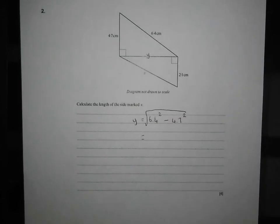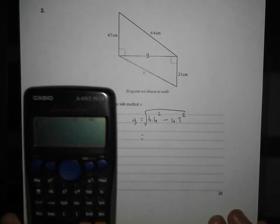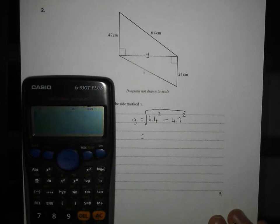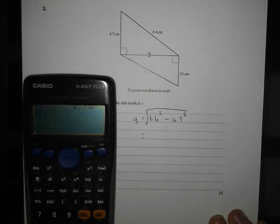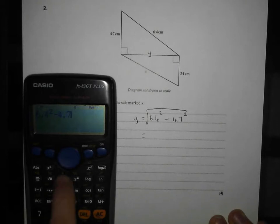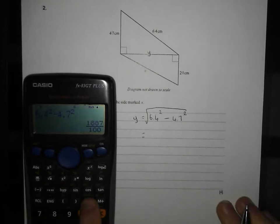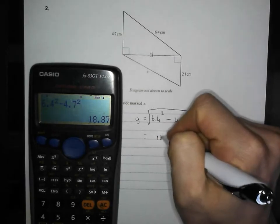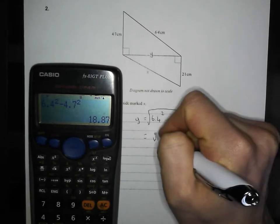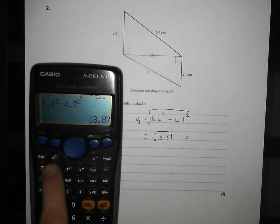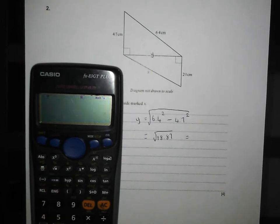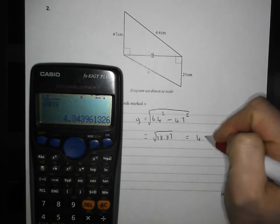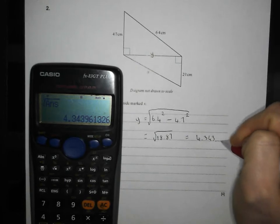Reach for your calculator. Here we go. So I'm going to do it in two goes, like I did before. 6.4 square it, take away 4.7 square it, press equals, comes out horrendous on the calculator, press your SD button, 18.87. Remember to square root it, square root of my answer, and that's going to come to 4.343 and so on.